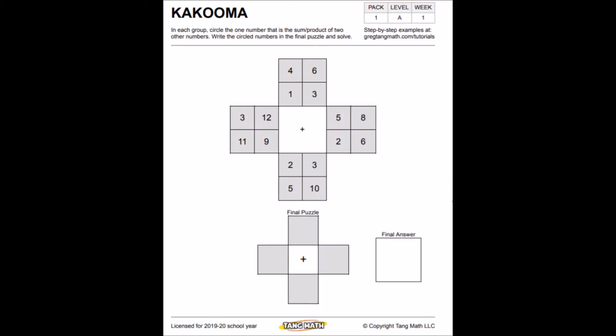Here is the grade one Kakuma. If you want to pause right now and write any of this down or just make sure you have a piece of paper and pencil handy if you choose, go ahead. To play Kakuma, you have to look at each group. And in each group, it says to circle the one number that is the sum or product of two other numbers. In first grade, it's always going to be the sum. So if you add two numbers, which two numbers in that box can you add together to get another number in the same box? Then you write the circle numbers in the final puzzle and then you solve from there.